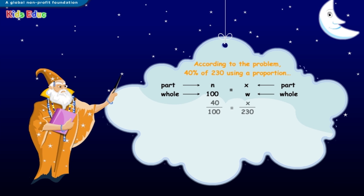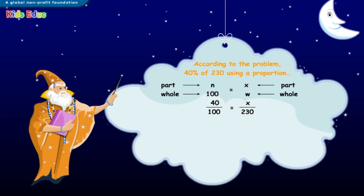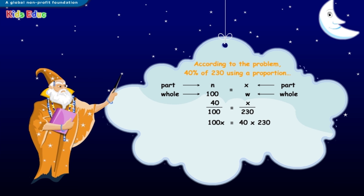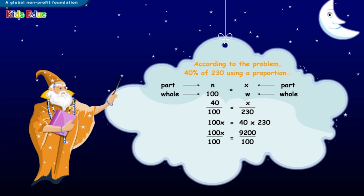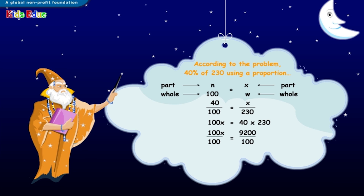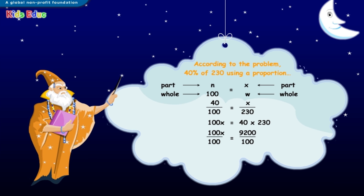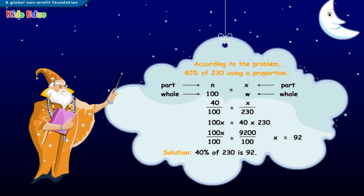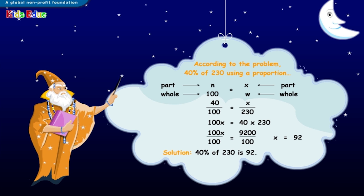According to the problem, forty divided by a hundred equals X divided by two hundred and thirty. Thus, one hundred times X is equal to forty times two hundred and thirty. So, X equals nine thousand two hundred divided by one hundred, which is equal to ninety-two. The solution of our problem is: forty percent of two hundred and thirty is X, or ninety-two.